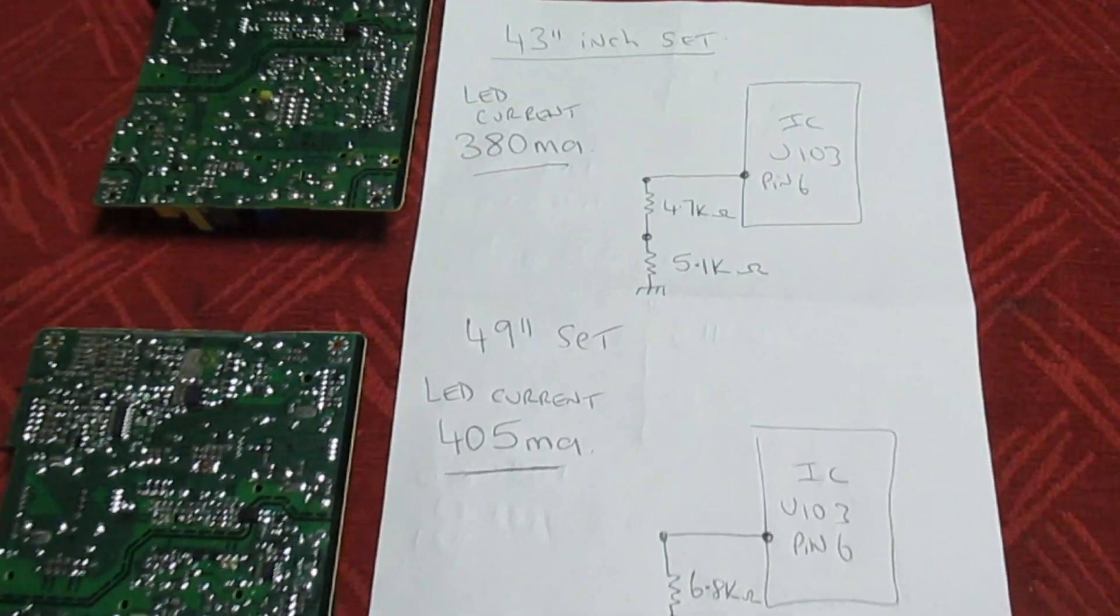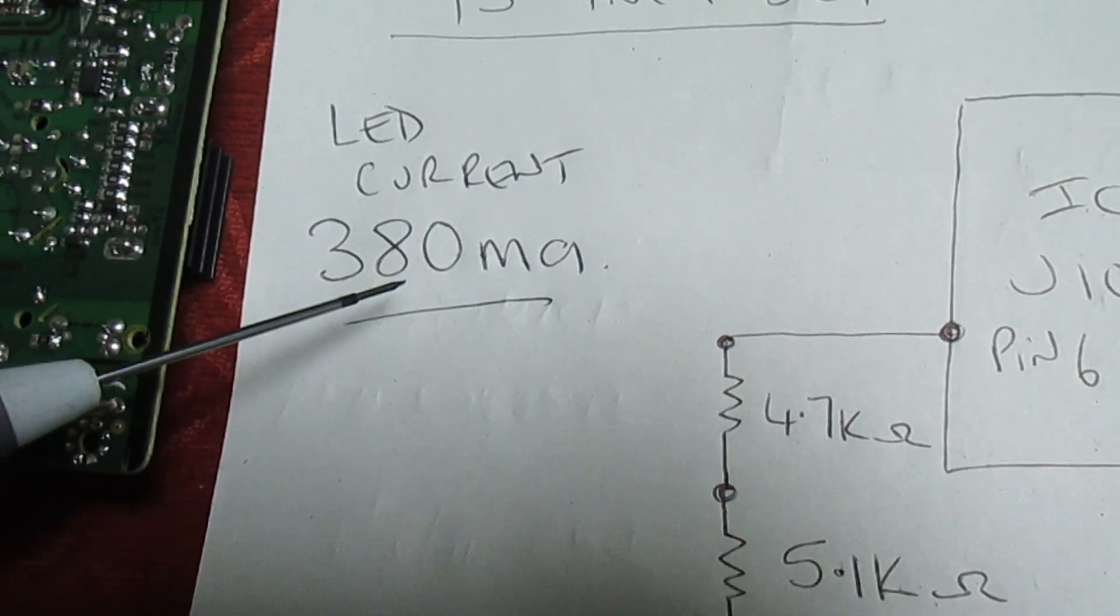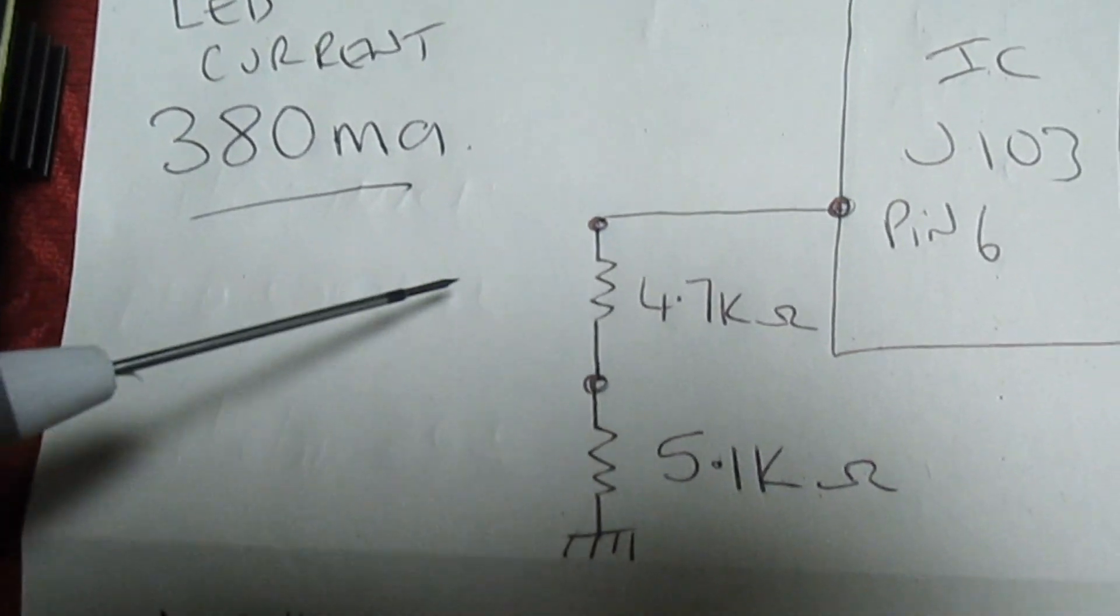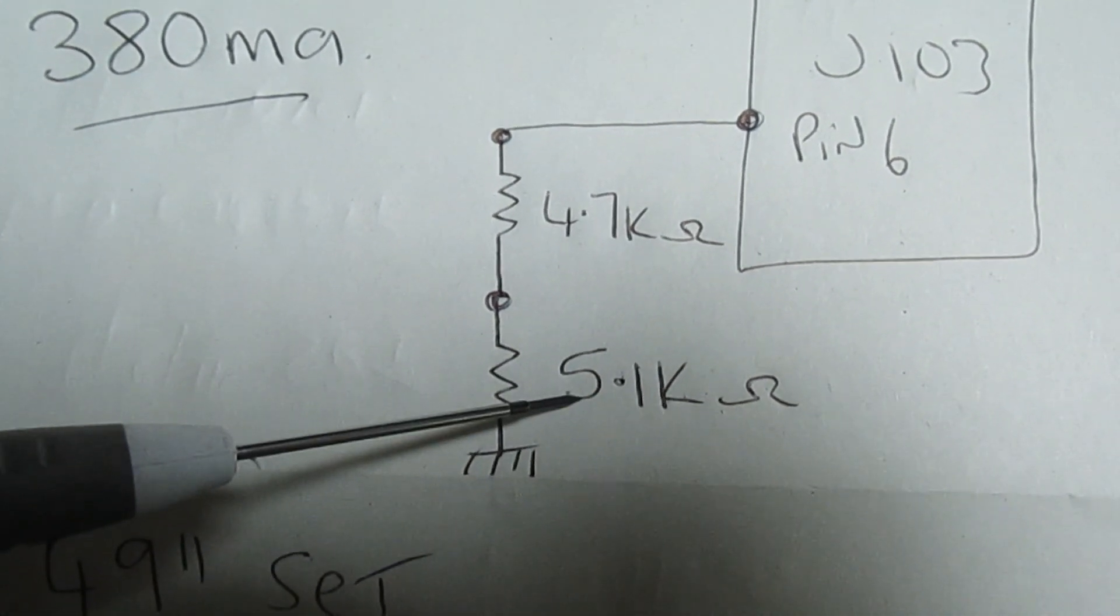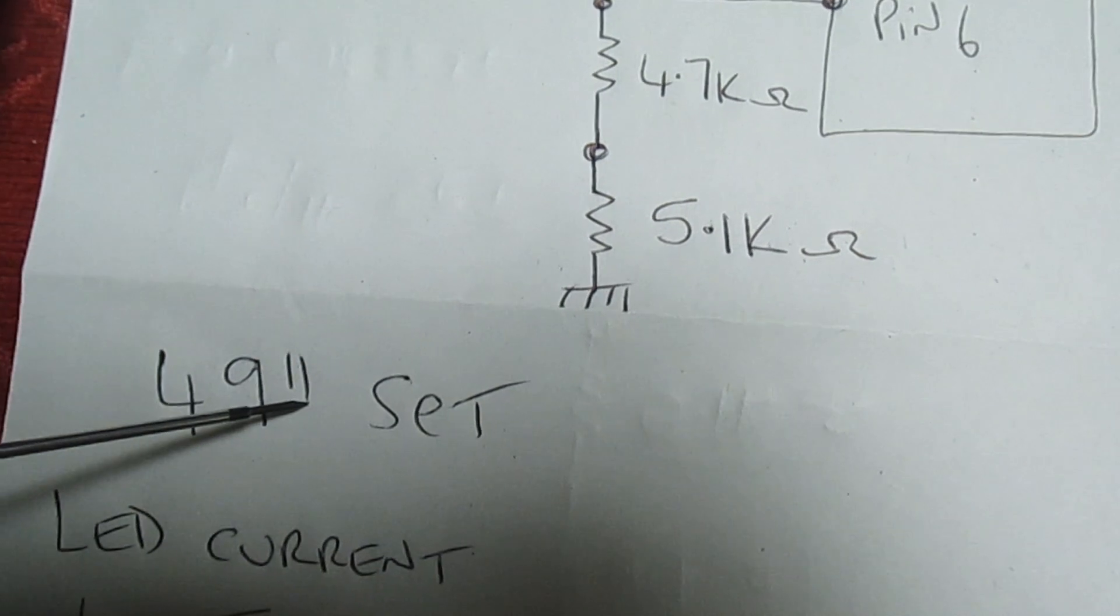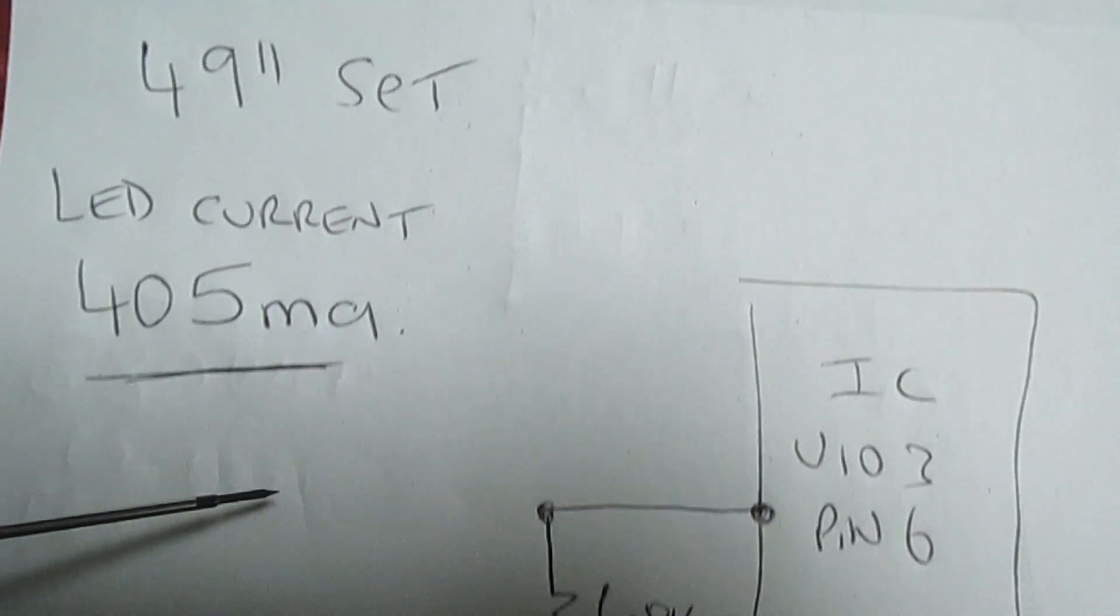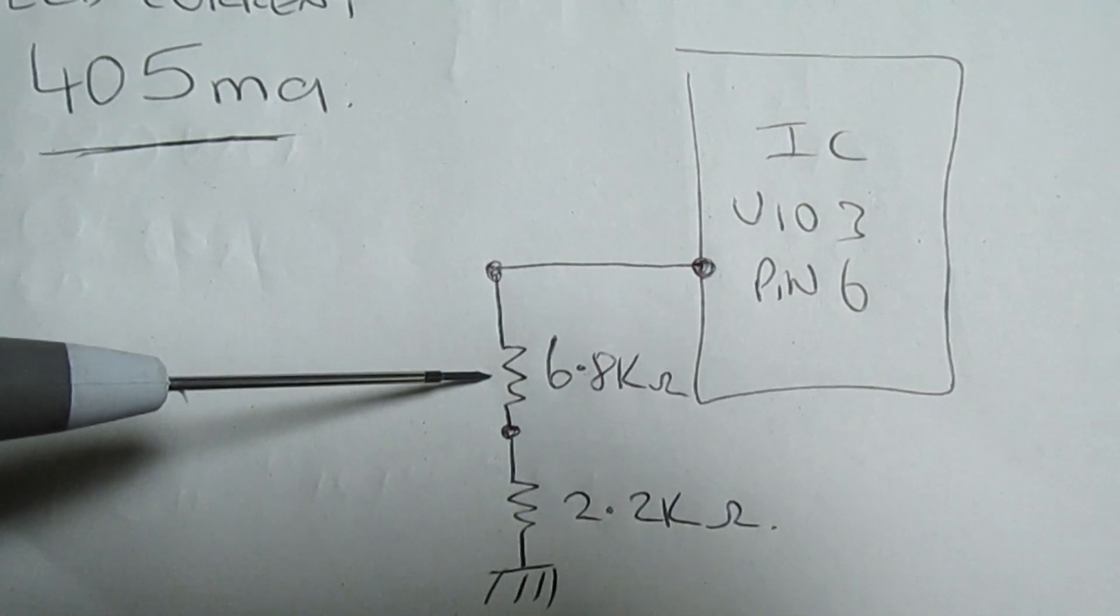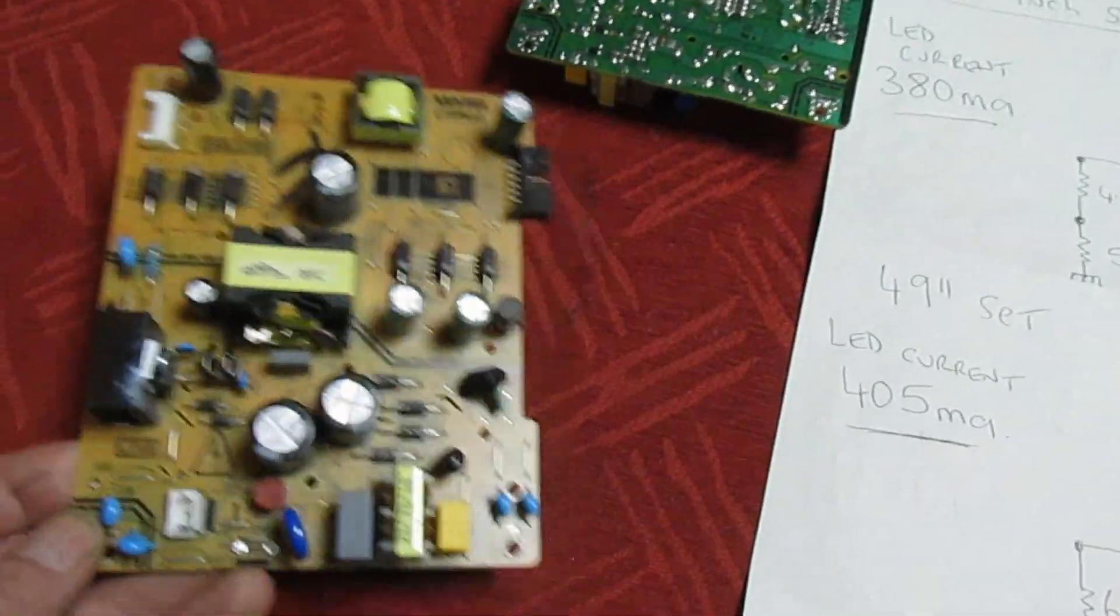Right, so this is the difference between these two boards. On the 43 inch one we've got an LED current of 380 milliamp and you can see it's a 4.7k and a 5.1k in series. And on the 49 inch we've got an LED current of 405 milliamps and you can see it's a 6.8k and a 2.2k.